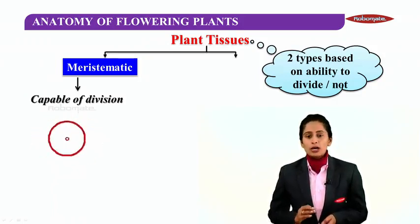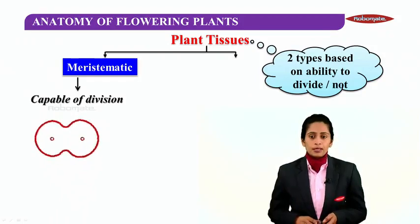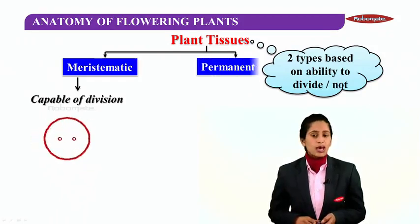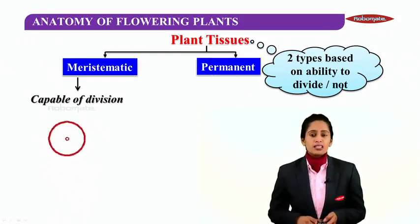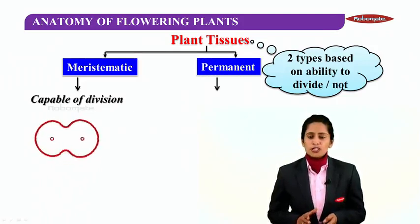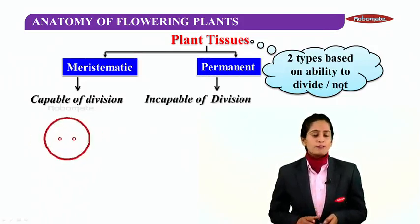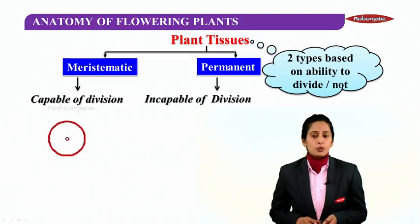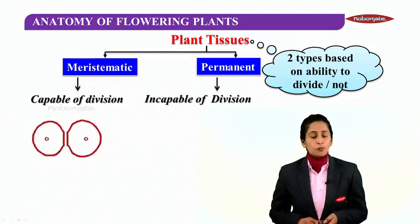The second group of tissues are called permanent tissues. These are tissues which have stopped dividing, are incapable of division, and are assigned with a particular function to take part in the plant body.